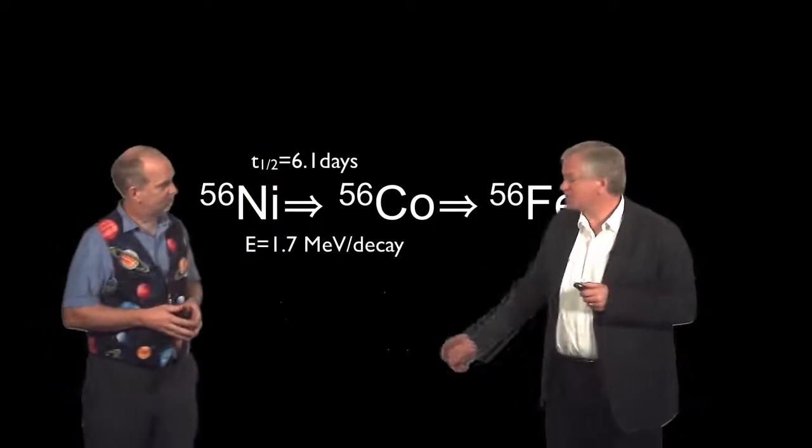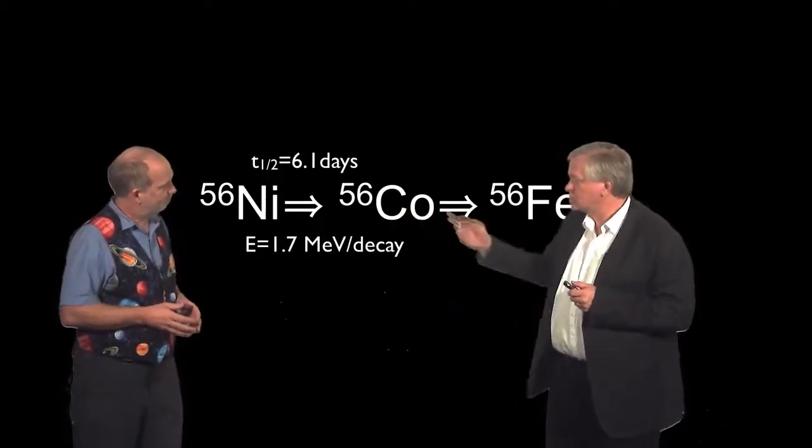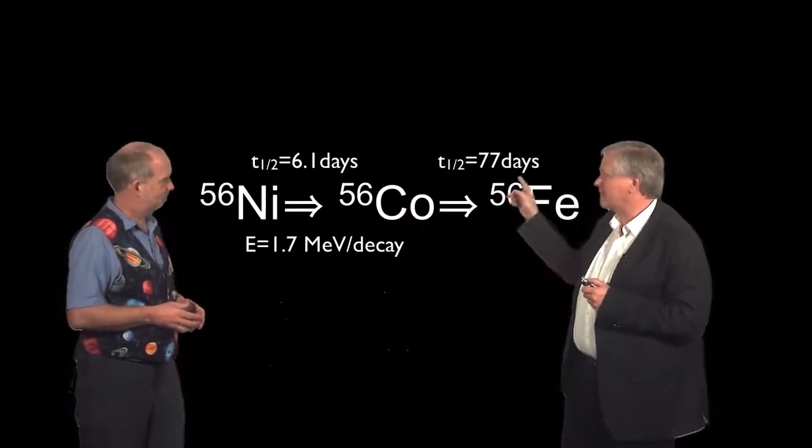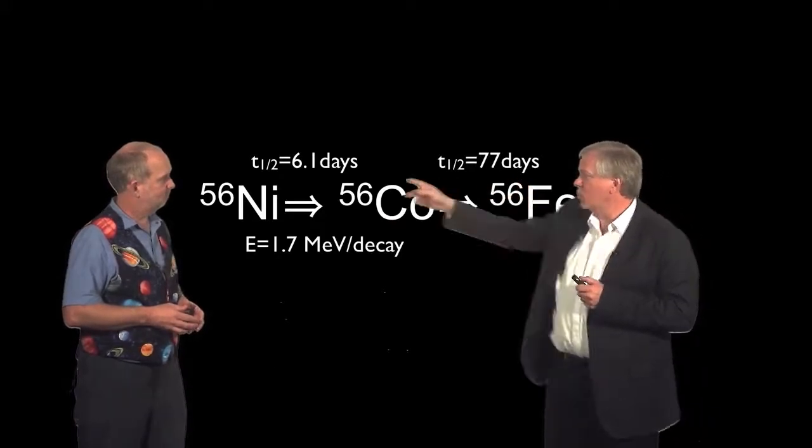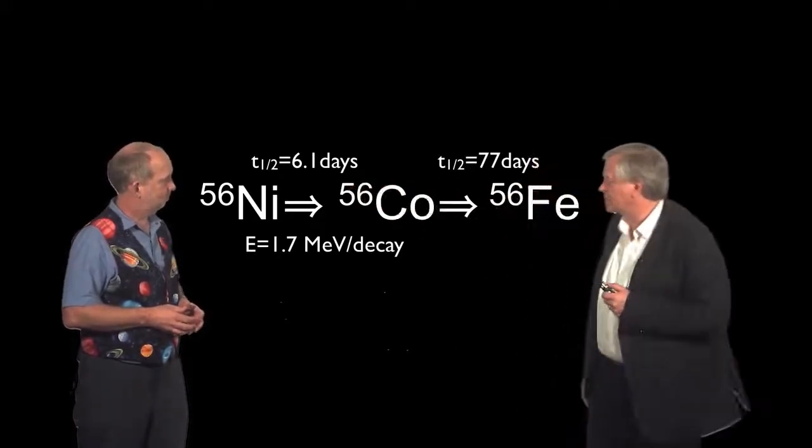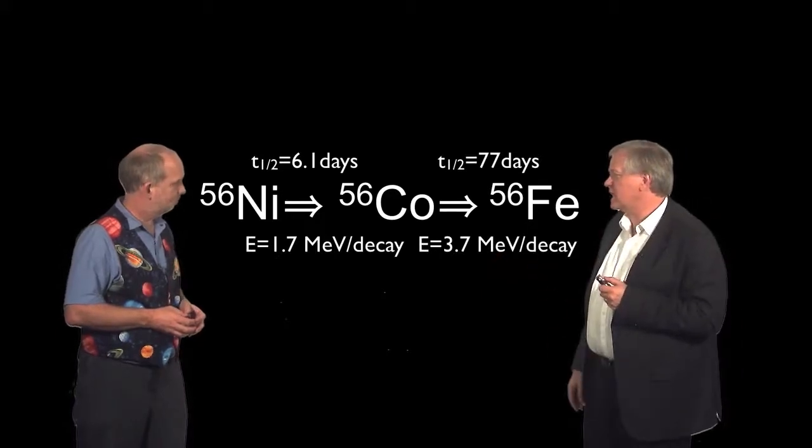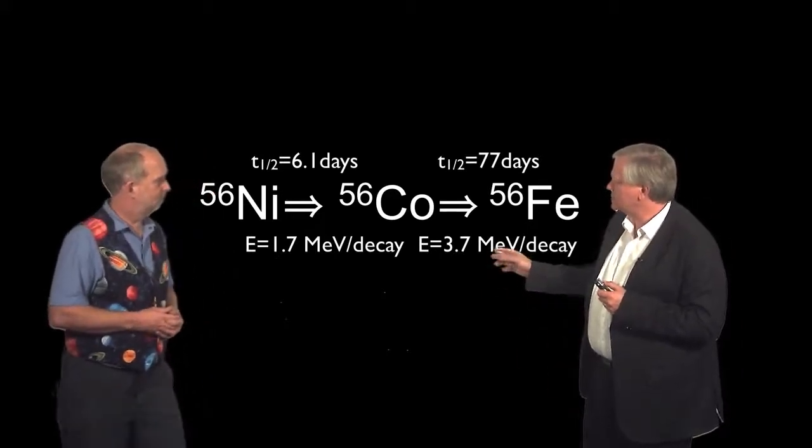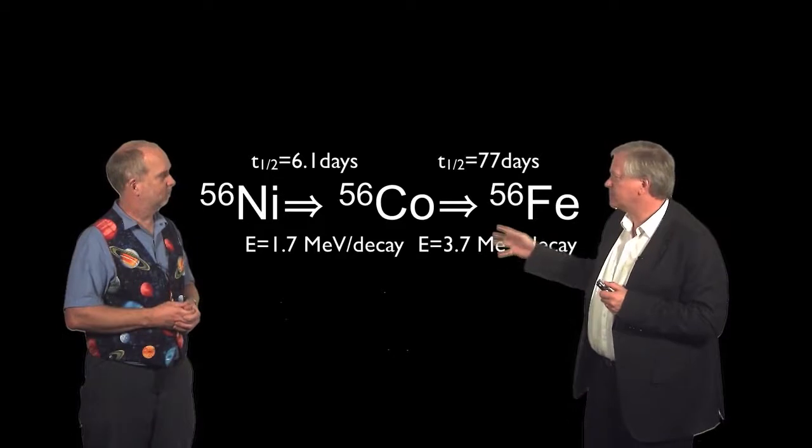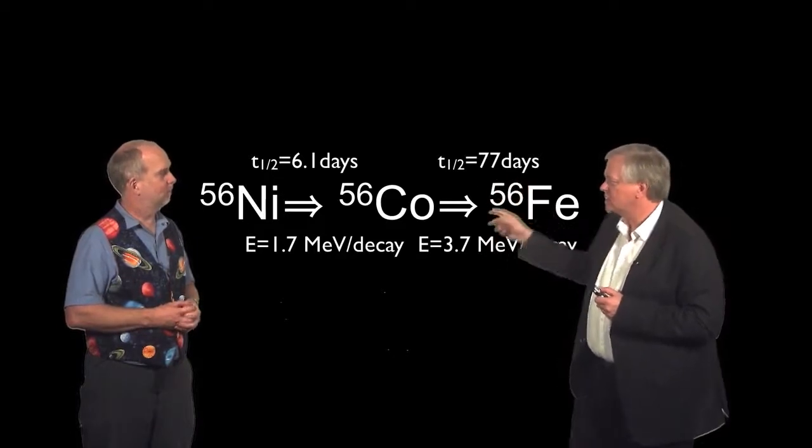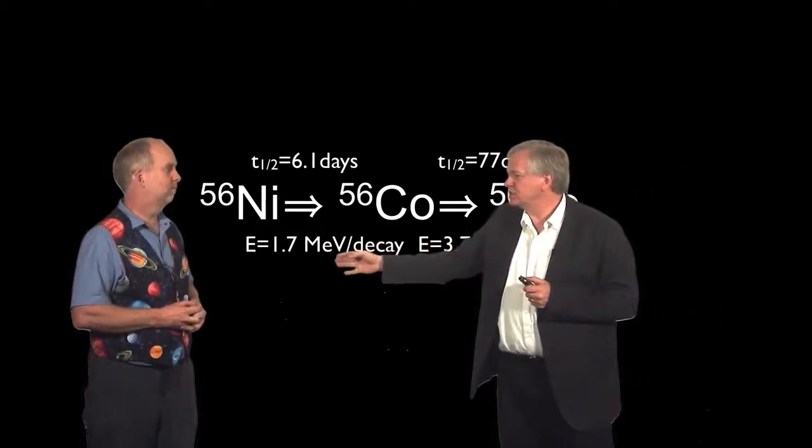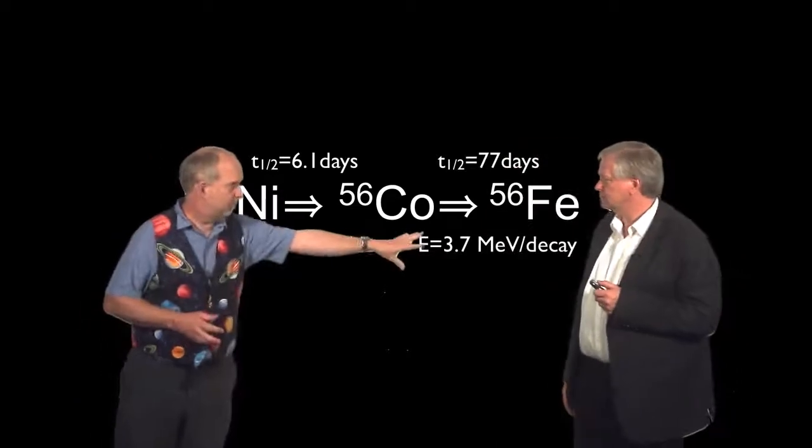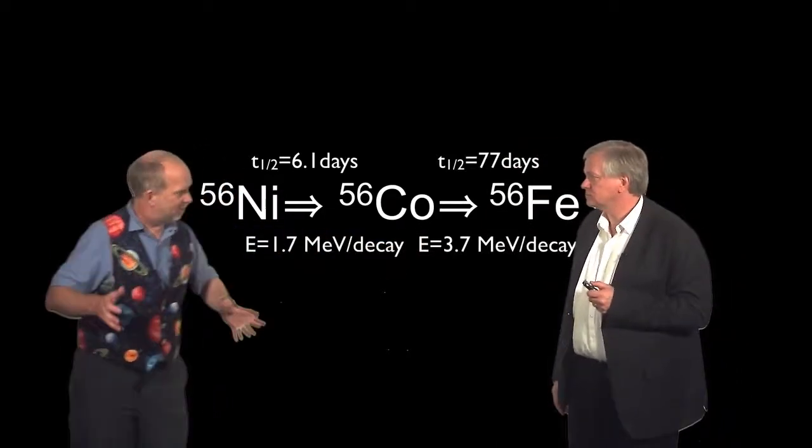So it's an interesting process. And of course, the cobalt, also radioactive. Now, it has a half-life of 77 days, so more than, you know, 10 times longer than that. And it produces more energy for each of those decays. So you might think that this would be more energetic, but because it's happening slower, there's actually a bigger pulse of energy here. So there's actually more energy there, but lower luminosity, because that's spread over more time.